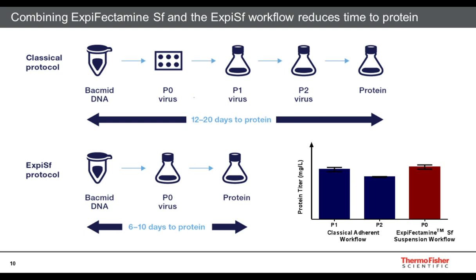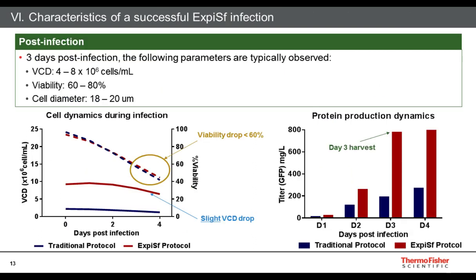Any questions not answered today will be answered via email. How can I tell if my cells have been efficiently infected with a virus? Look for a viability drop to 60-80% by day three post-infection, which can vary slightly by protein class. Cell diameter increase is also important to note — since the virus infects and swells the cells as they produce protein, an increase in cell diameter is a good indicator of efficient infection.